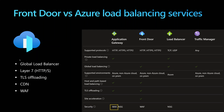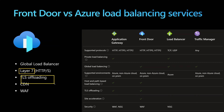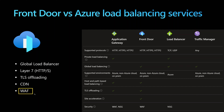For Azure Front Door, it's a global load balancer — it can route traffic to multiple regions. It supports layer 7, meaning it supports HTTP and HTTPS with TLS offloading. It also provides CDN content delivery network for site acceleration, and the WAF feature — Web Application Firewall — to secure incoming traffic.